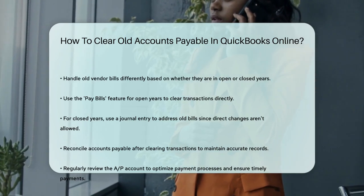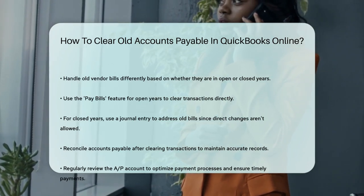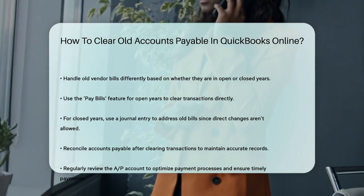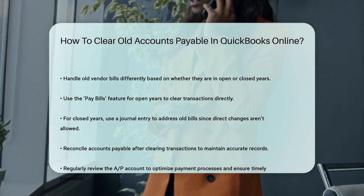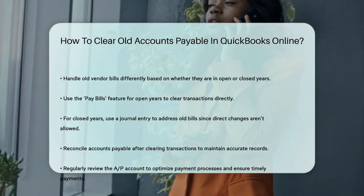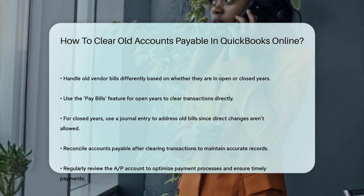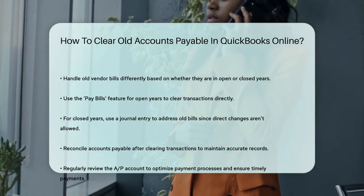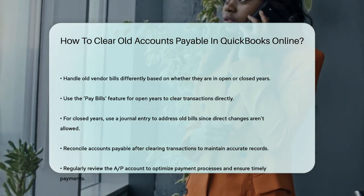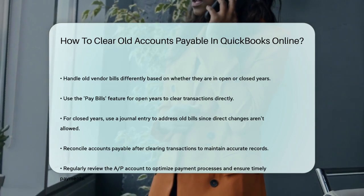Reconciling and Reviewing. After clearing the old transactions, make sure to reconcile your accounts payable to ensure accuracy and timeliness of payments. Regularly reviewing your AP account helps in maintaining accurate financial records and optimizing your payment processes. By following these steps, you can effectively clear old accounts payable transactions in QuickBooks Online, keeping your financial records clean and up-to-date. Remember, if you're unsure about any part of the process, it's always best to consult with your accountant for personalized advice.